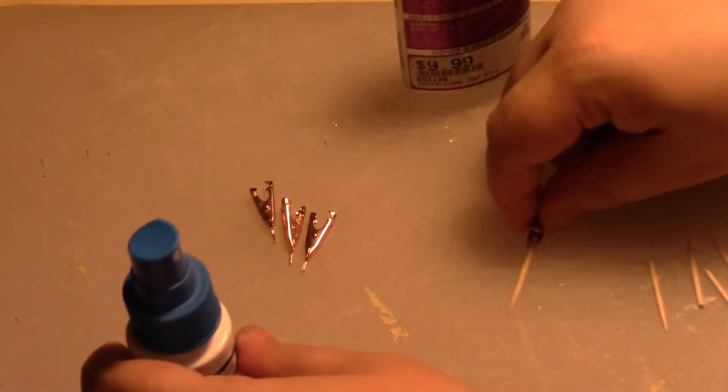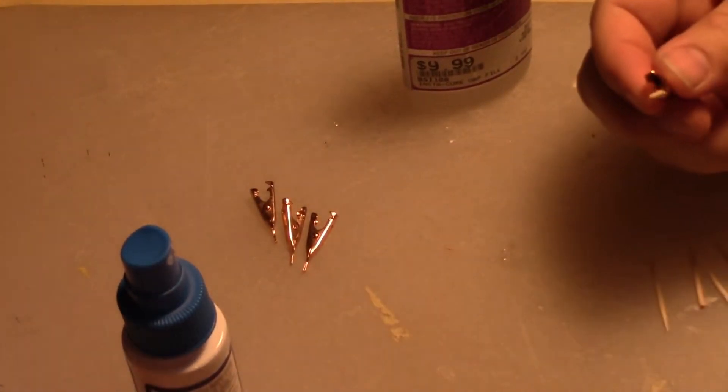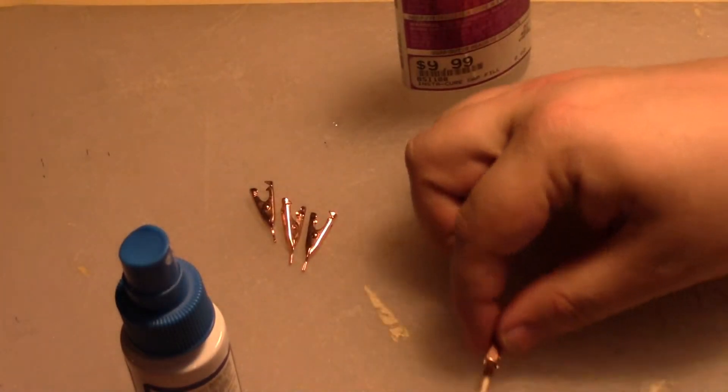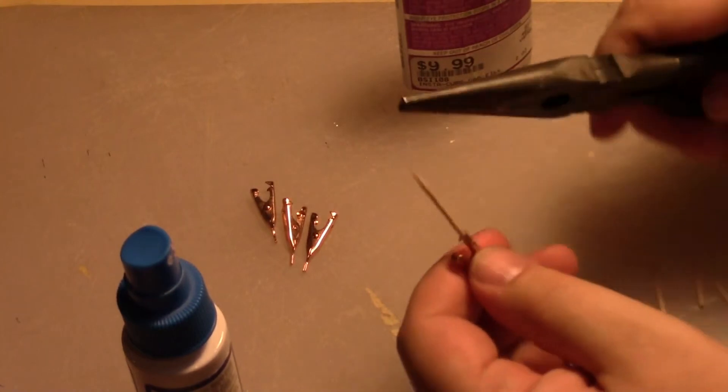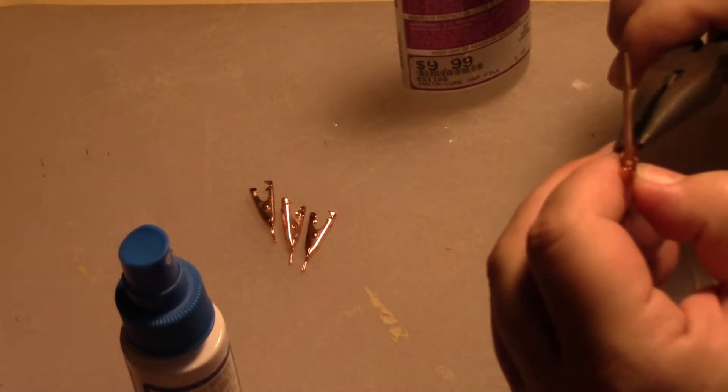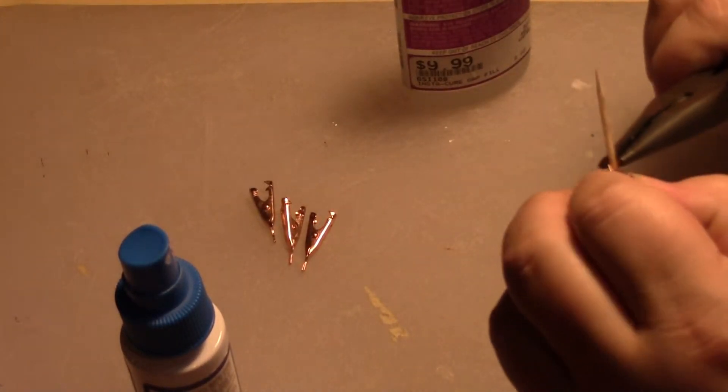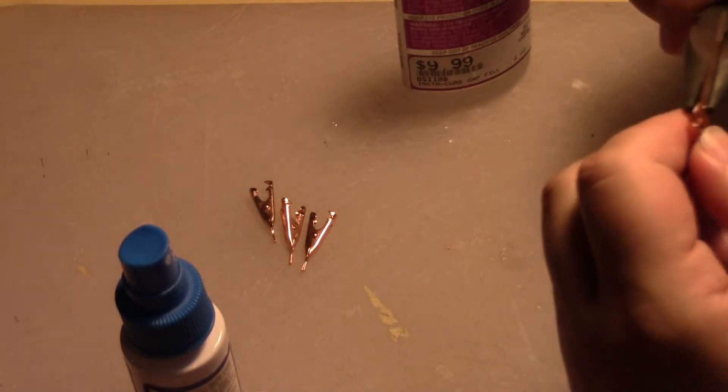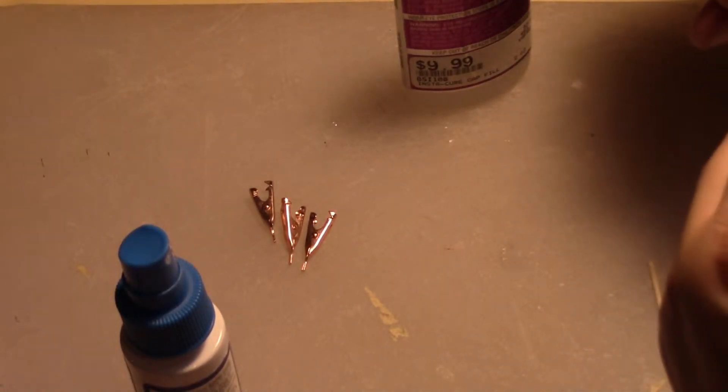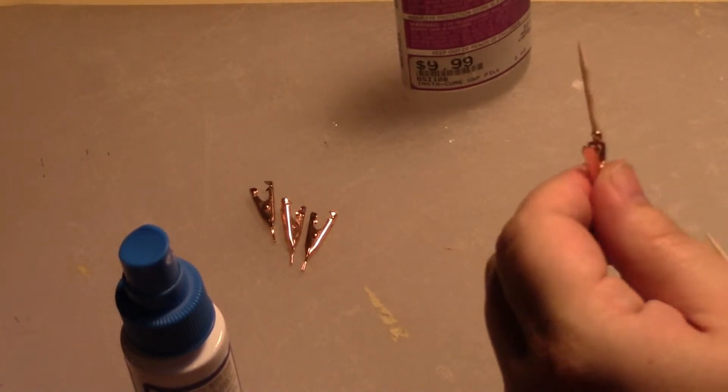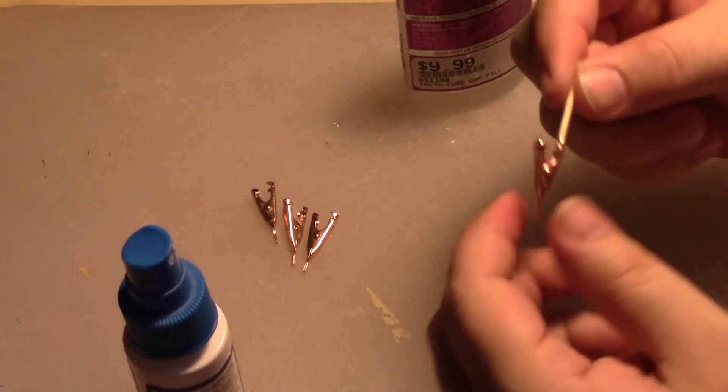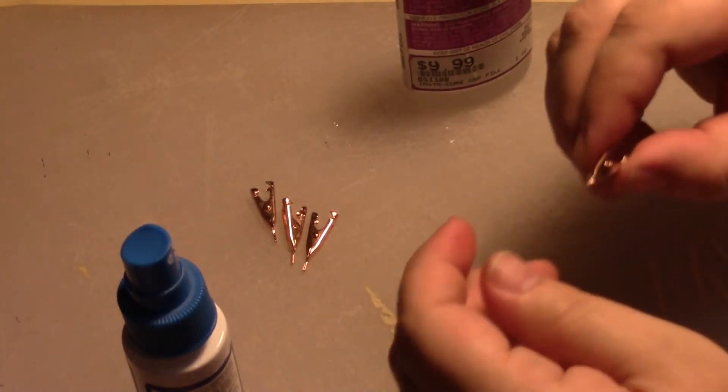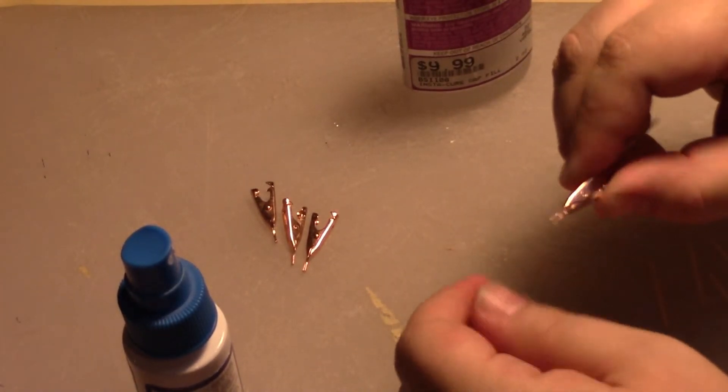Quick little dab of accelerator because like I said I am lazy. Then use pliers to close the teeth around the toothpick so that way this isn't going to fall off. Make sure you didn't get any glue on the spring otherwise the clamp isn't going to work.